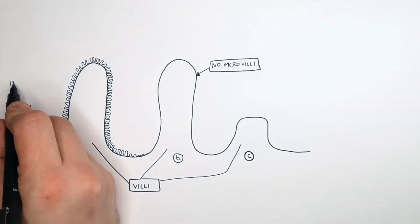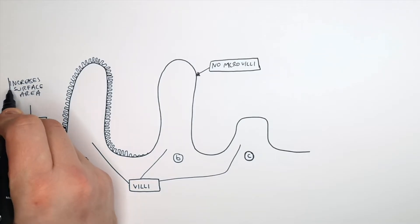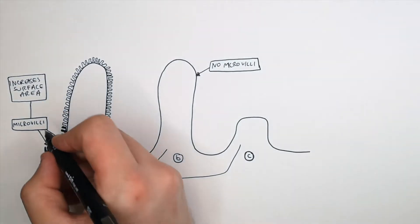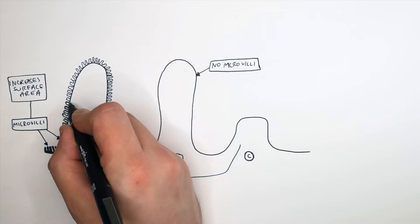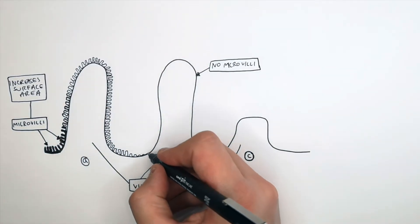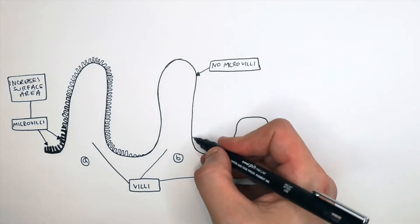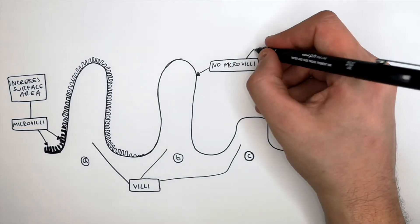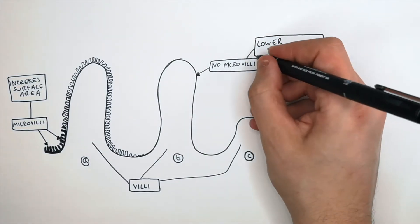The function of micro villi is to increase the surface area of the cell. Villi A has a larger surface area because it's covered in micro villi, in comparison to villi B which has no micro villi and therefore has a smaller surface area.